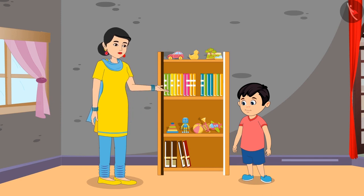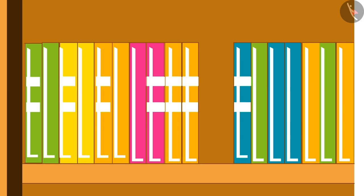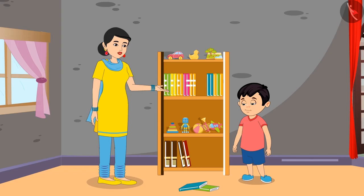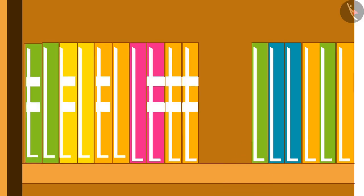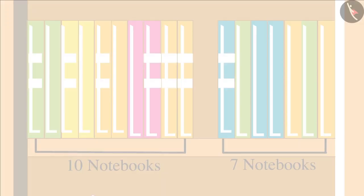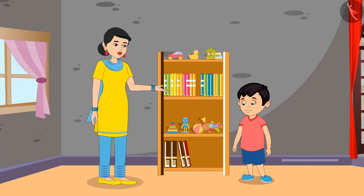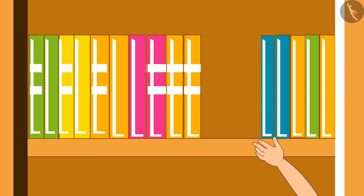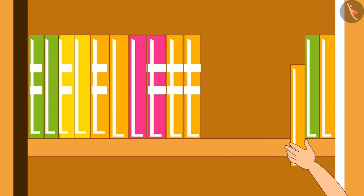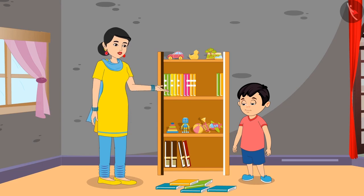Mother says, 'Chotu, tomorrow is the first day of your new class, so today you must separate all your used notebooks and new notebooks.' Chotu begins but mother guides him: 'First of all, count all your notebooks.' Chotu counts and finds he has 17 notebooks. He then separates the used ones — one, two, three, four, five — five notebooks are used.